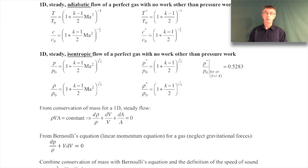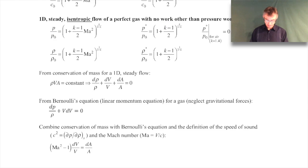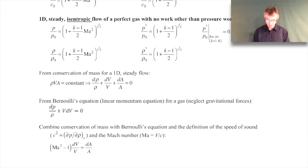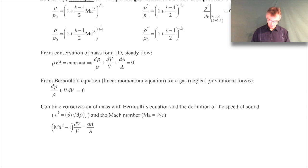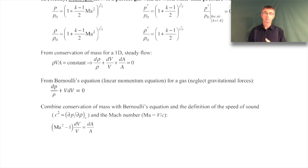Now we're going to take into account changes in area. We'll start with conservation of mass for one-dimensional steady flow: ρvA equals a constant. We take the derivative of that expression - keeping in mind that density, velocity, and area can all vary - and rearrange it. Then we'll combine it with Bernoulli's equation in differential form, which is just the linear momentum equation with gravitational effects removed since we're dealing with a gas.